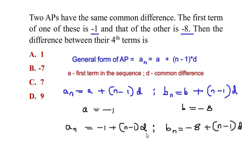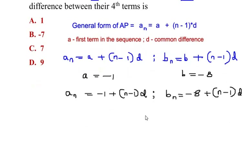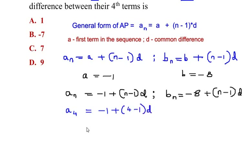Now let us find the fourth terms of these arithmetic progressions. For the fourth term of the first AP, we substitute n equals 4: a_4 is equal to negative 1 plus 4 minus 1 times d, which simplifies to negative 1 plus 3d.